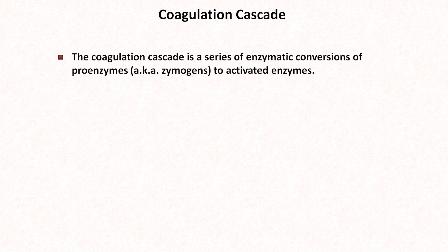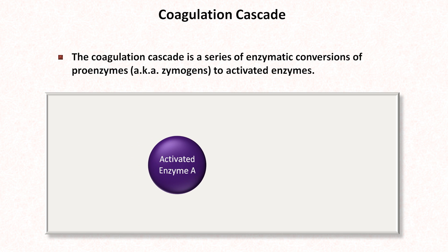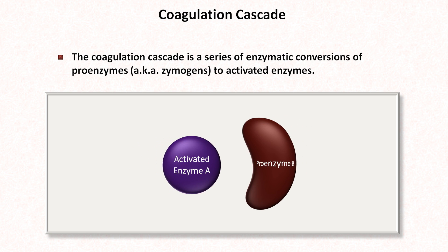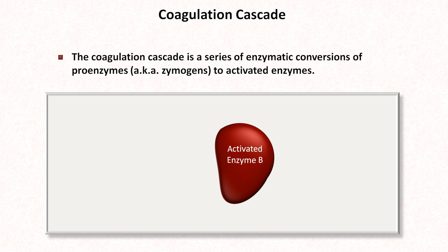As with platelet activation, it's easy to get lost in the many specific details of the coagulation cascade, but let's begin with a few general principles. The coagulation cascade is a series of enzymatic conversions of inactive proenzymes, also known as zymogens, to activated enzymes. For example, imagine activated enzyme A comes along and induces a conformational change in proenzyme B, thus activating it. Then activated enzyme B might cleave something off of a proenzyme C, activating that.